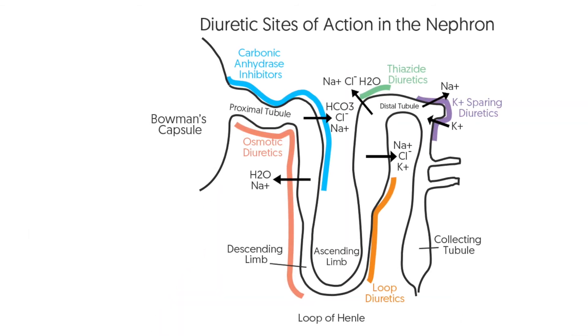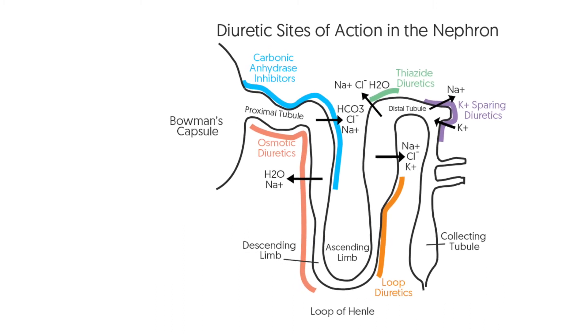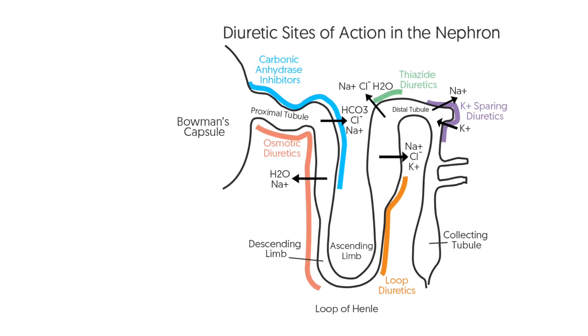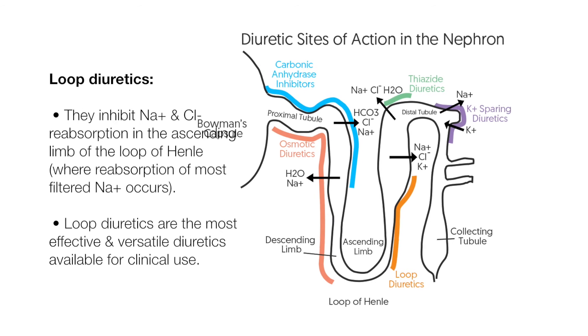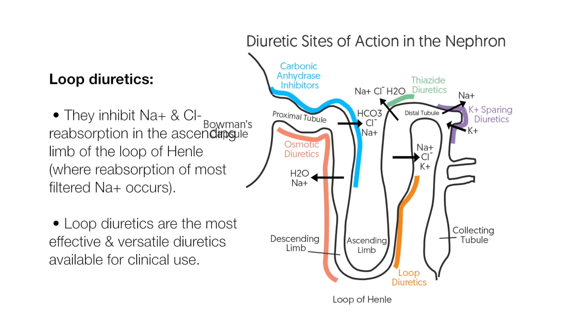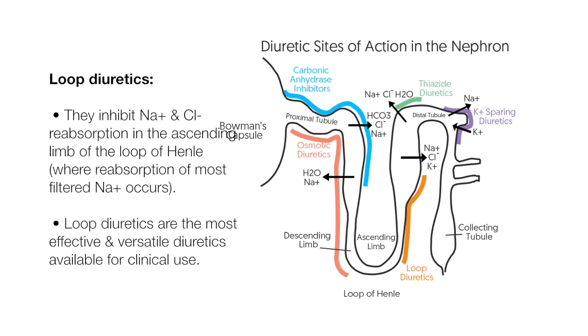Loop diuretics are the diuretic of choice when renal function is impaired or when rapid diuretic effects are required. They inhibit sodium and chloride reabsorption in the ascending limb of the loop of Henle, where reabsorption of most filtered sodium occurs. Loop diuretics are the most effective and versatile diuretics available for clinical use.